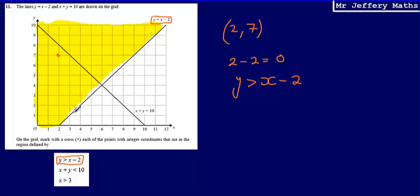We know that it's going to be coordinates which are above this line. We then know that it's x plus y is less than 10, so that means it's going to be coordinates which are above this line, y equals x minus 2, but below this line, x plus y equals 10.